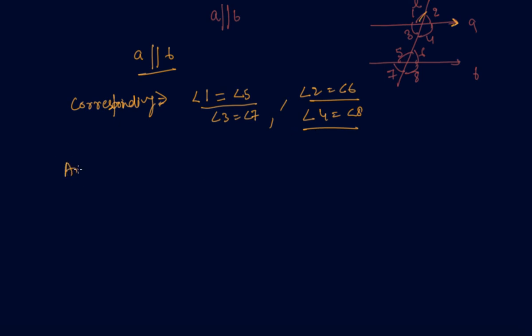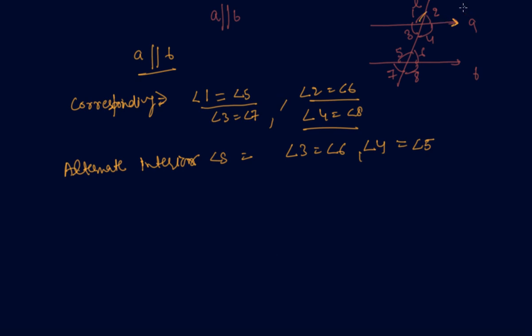Similarly, alternate interior angles are also equal: angle 3 equals angle 6 and angle 4 equals angle 5. So students, you can directly solve any question based on these properties of parallel lines. Remember that in the case of parallel lines, corresponding angles are equal and alternate interior angles are also equal. If you have any doubt or question, please comment in the comment section — I will be happy to help. In my next lecture I will discuss some questions based on these angles, so stay tuned.